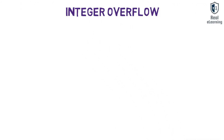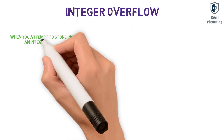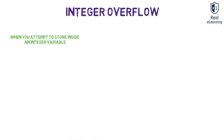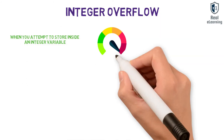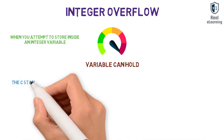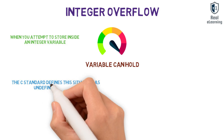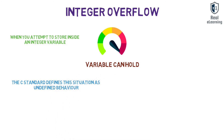An integer overflow occurs when you attempt to store inside an integer variable a value that is larger than the maximum value the variable can hold. The C standard defines this situation as undefined behavior, meaning that anything might happen.